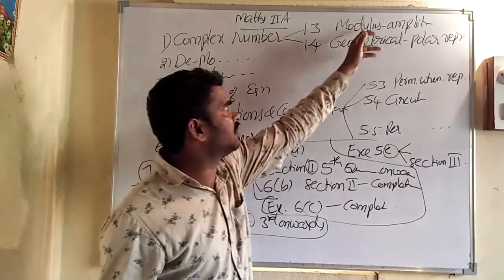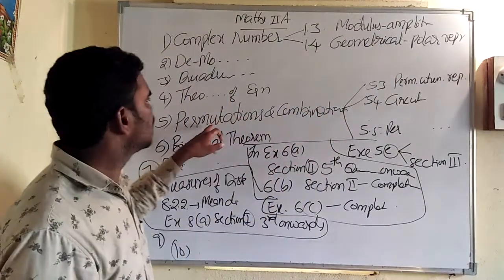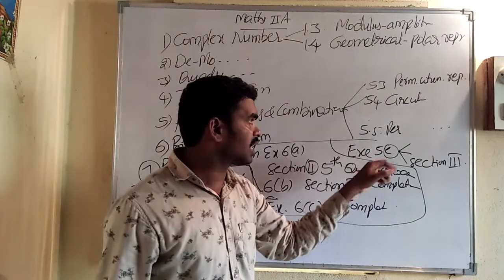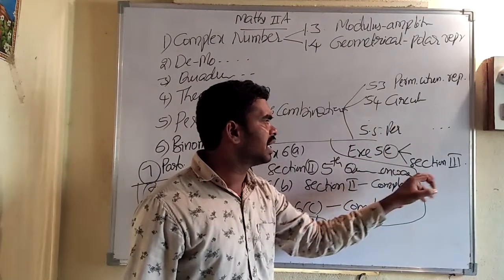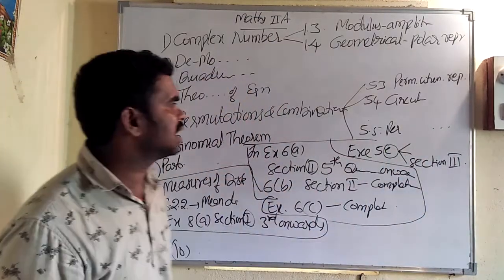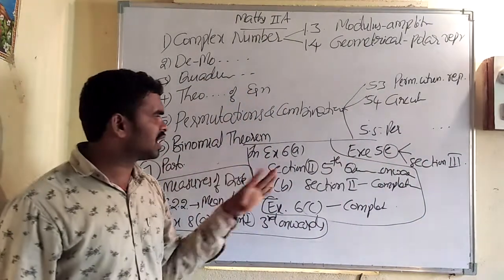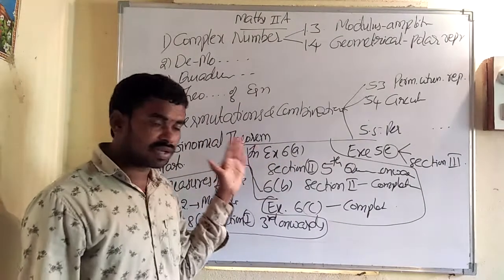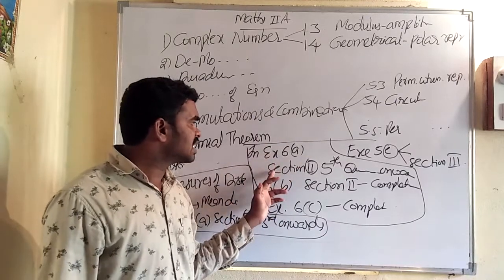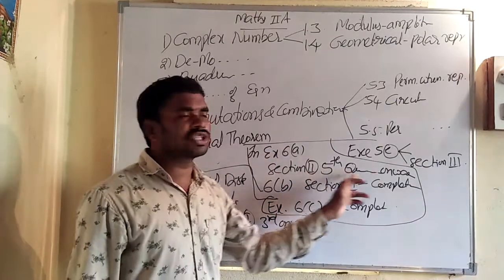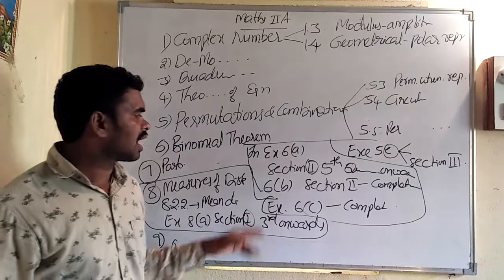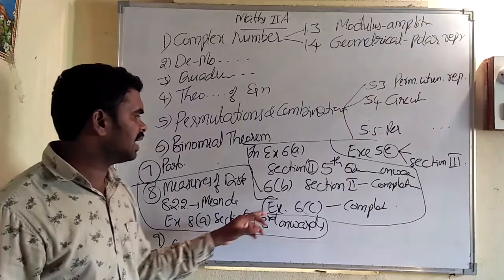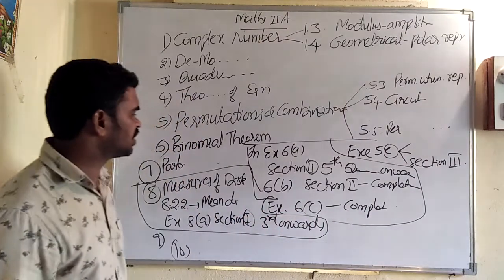So you just try to know in this complex number, just leave the modulus and the geometrical presentation. In 5th chapter, leave 5.3, 5.4, 5.5, and also in exercise 5E, section 3 also leave. And in 6th chapter, just leave exercise 6E complete. Sorry, not complete 6E. In exercise 6E, section 2, fifth question onwards, just leave. And exercise 6B, section 2, completely leave. And exercise 6C, completely leave.